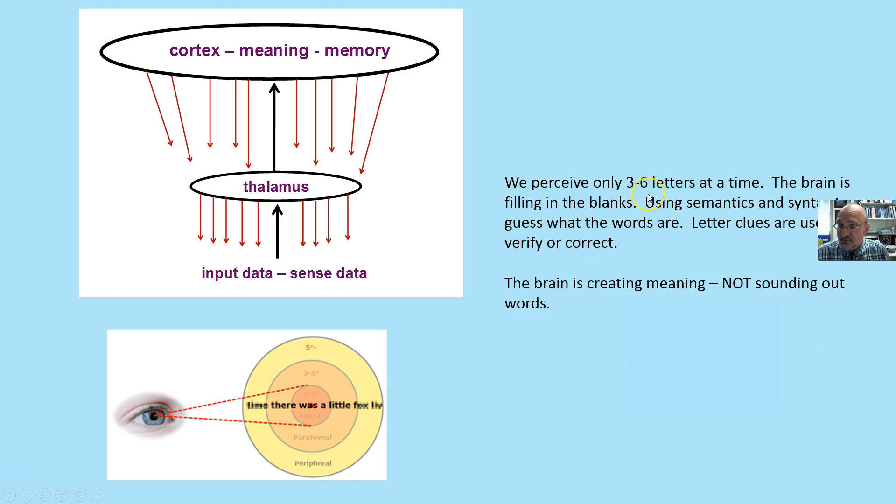We receive three to six letters; the brain fills in the blanks using semantics and syntax to guess what the correct words are or might be. Letter clues are used to verify or correct those predictions. The brain is creating meaning with print, not sounding out words. Reading is not sounding out words; reading is the process of creating meaning with print.